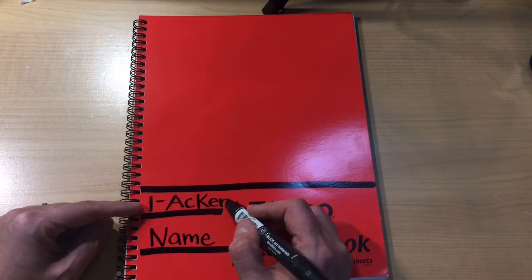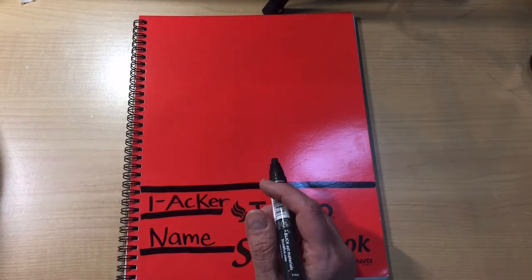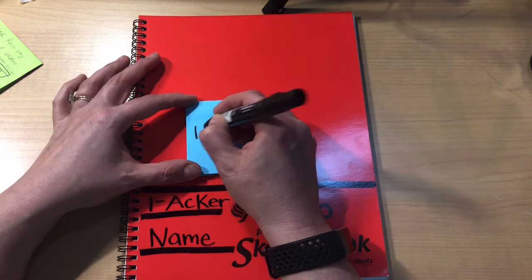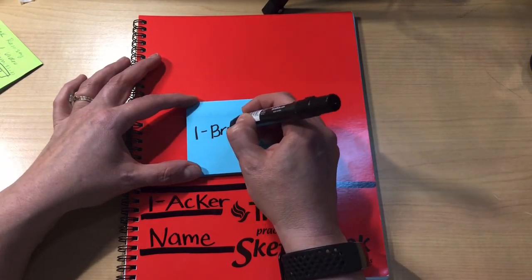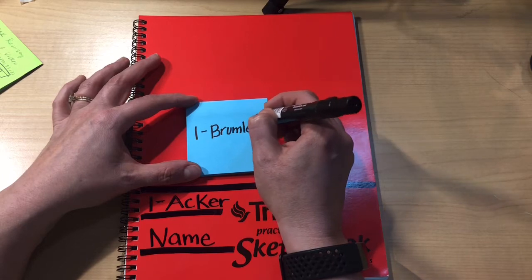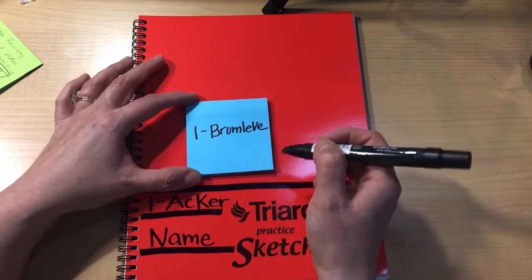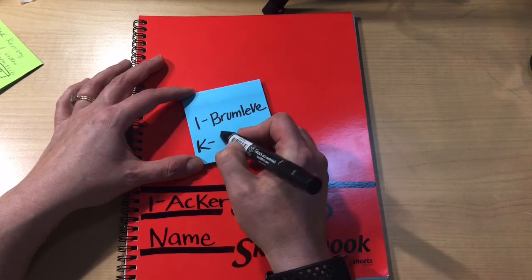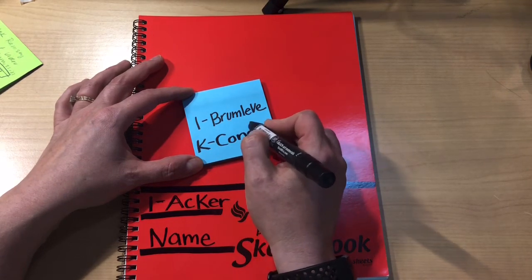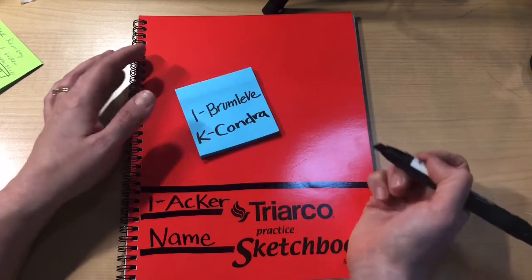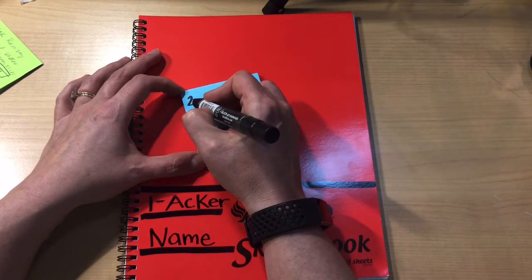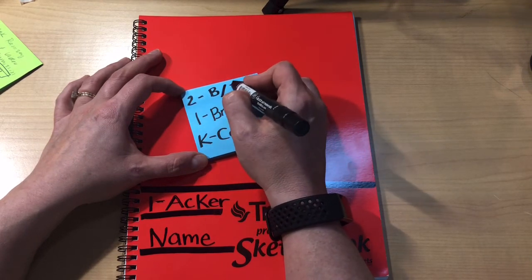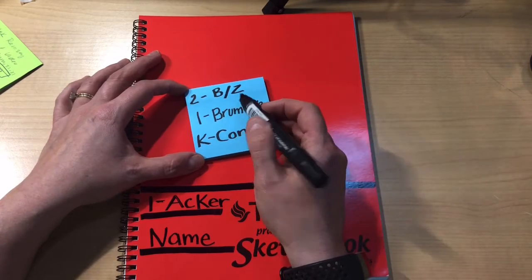For example, if you're in Miss Brum Levy's class you'll write one-Brum Levy. If you're in Miss Chondra's class you'll write K-Chondra. If you're in Dr. B's class, you'll write two-BZ for Dr. B and Miss Zeller.